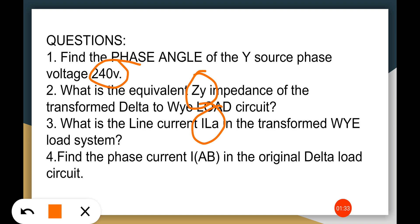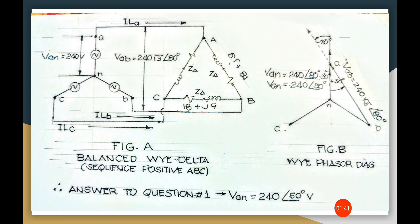Number four: we have to find the phase current Iab in the original delta load circuits. Let's go to the next slides.